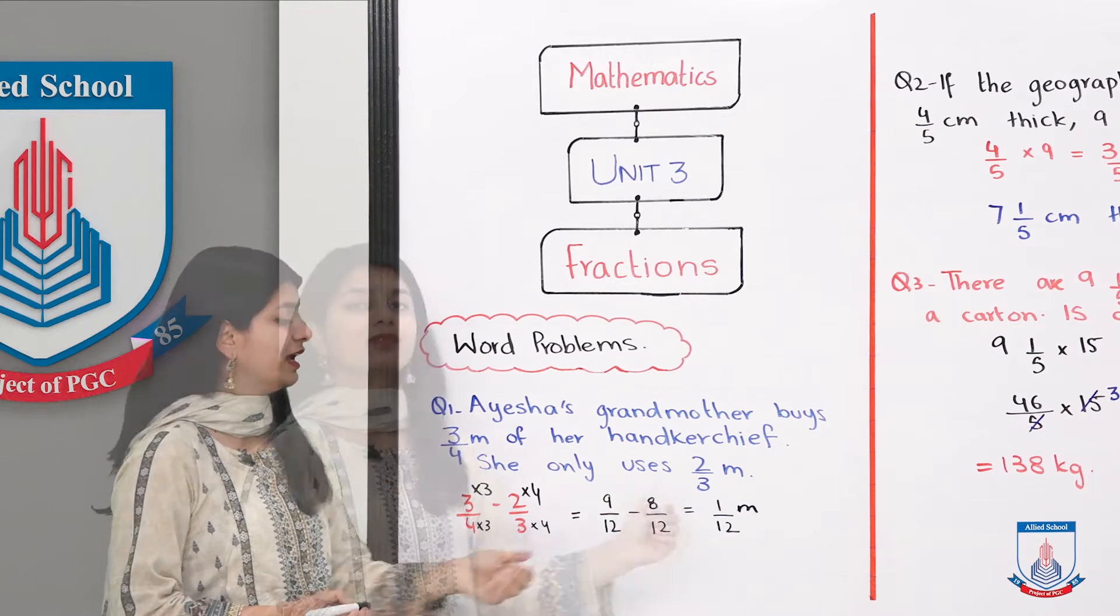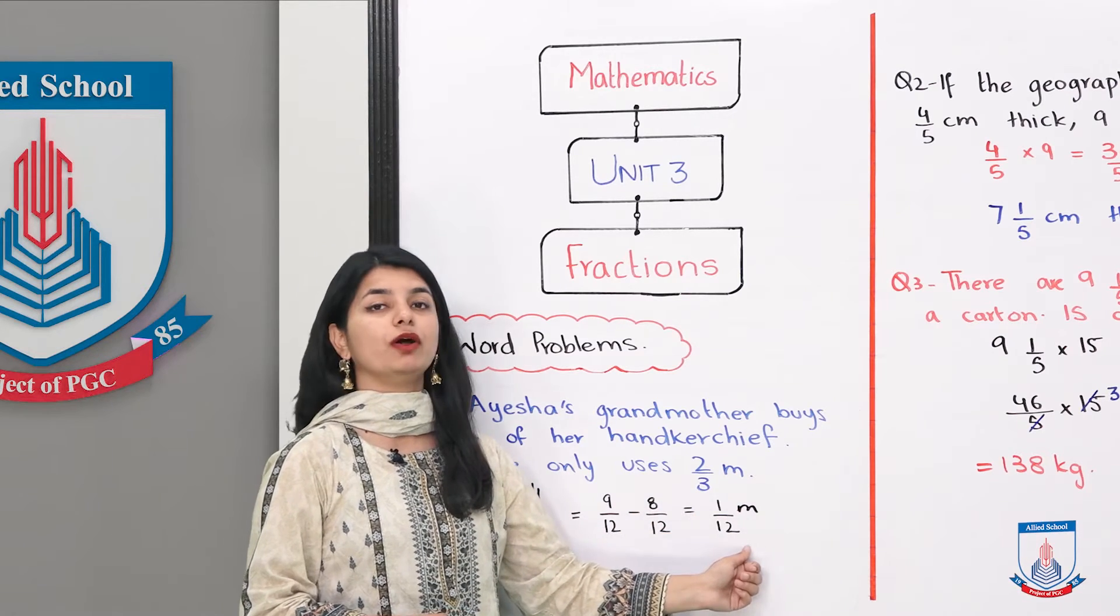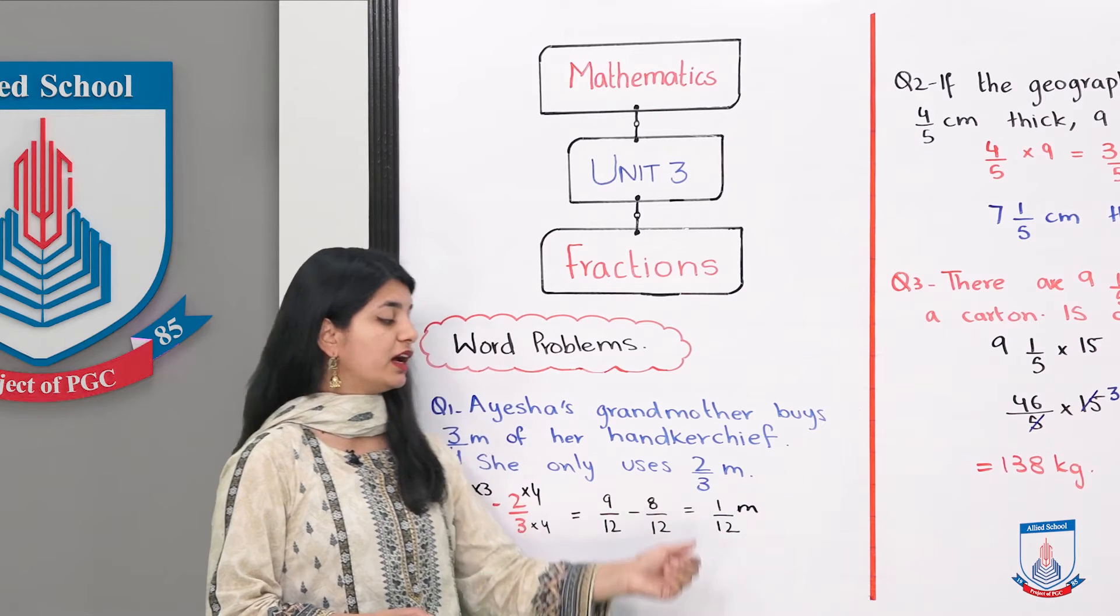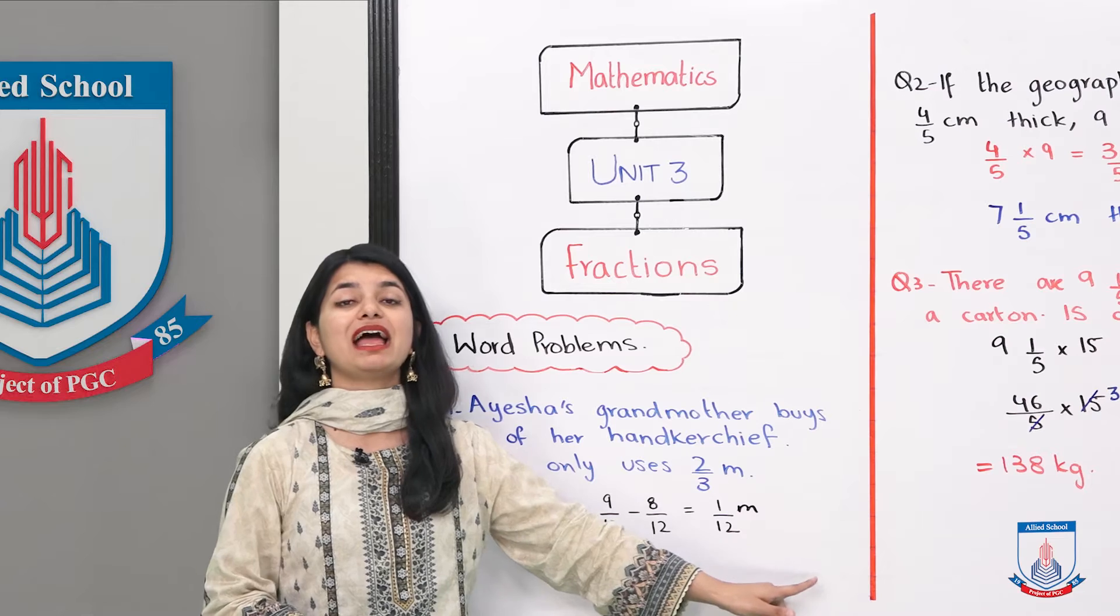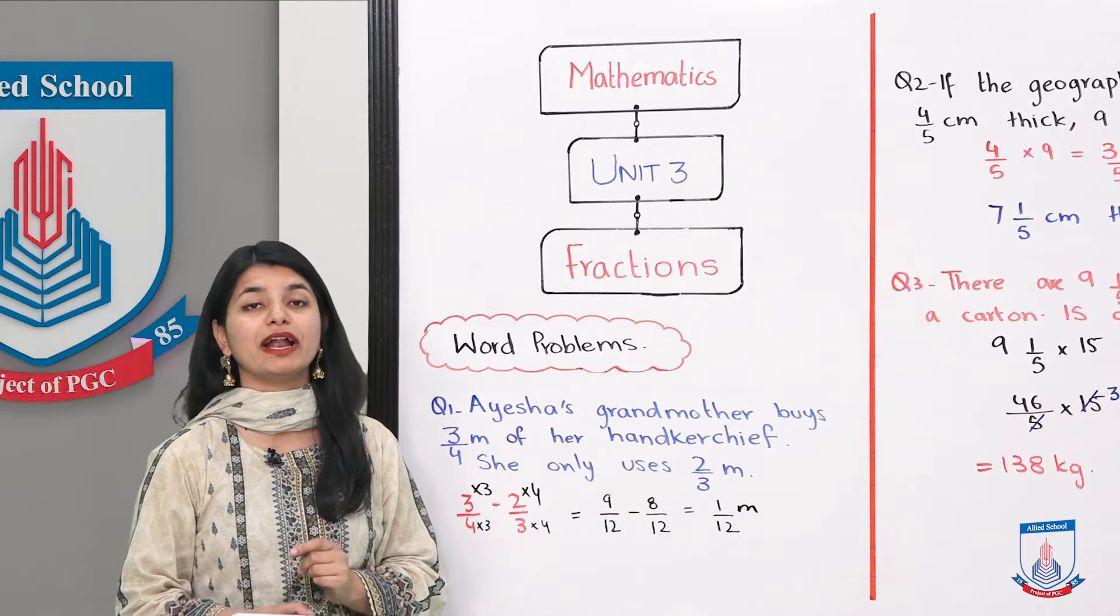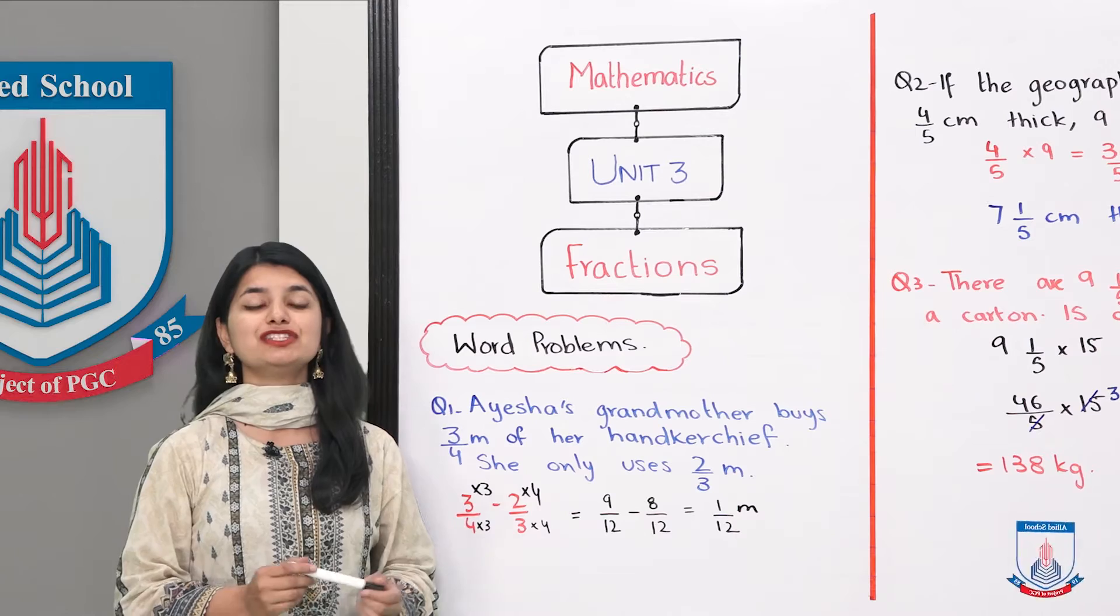Now we can subtract them. 9 minus 8 and then you have 12 as it is. 1 over 12 meters is your answer. She will have 1 over 12 meters of the fabric for her handkerchief left.